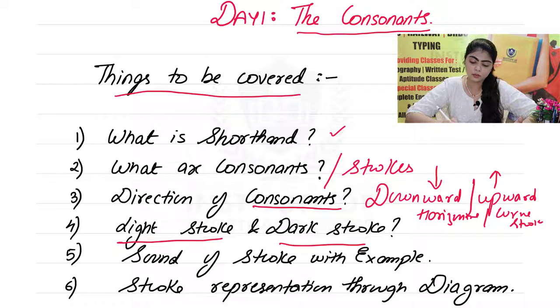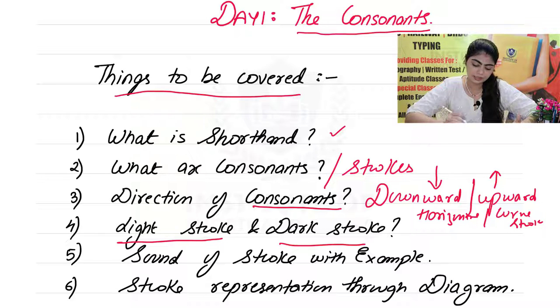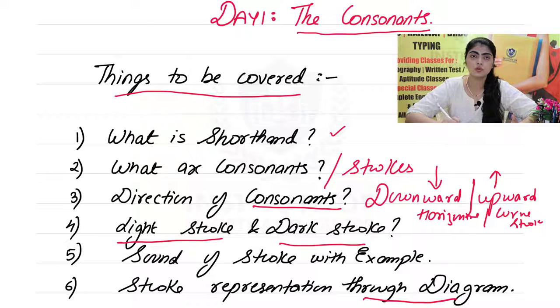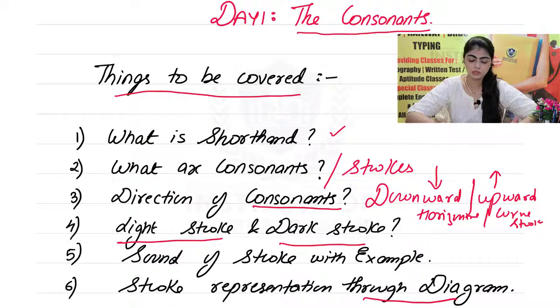Fifth, sound of stroke with examples — I will tell you about letters like P, B, C, H; CH is pronounced as J. Next is stroke representation through diagrams — I will make diagrams explaining the angles and directions of strokes. If you have any doubts, contact us on our Telegram channel or comment below. If you are new to our channel, please subscribe and press the bell icon to get all updates.